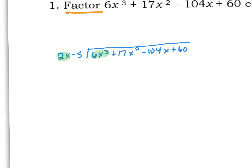Another way of thinking about that is: 2x times what is going to give us 6x cubed? If we multiply 3x squared times 2x, we get 6x cubed. So 3x squared goes up top. We also have to multiply that 3x squared times the second term, which gives us minus 15x squared.